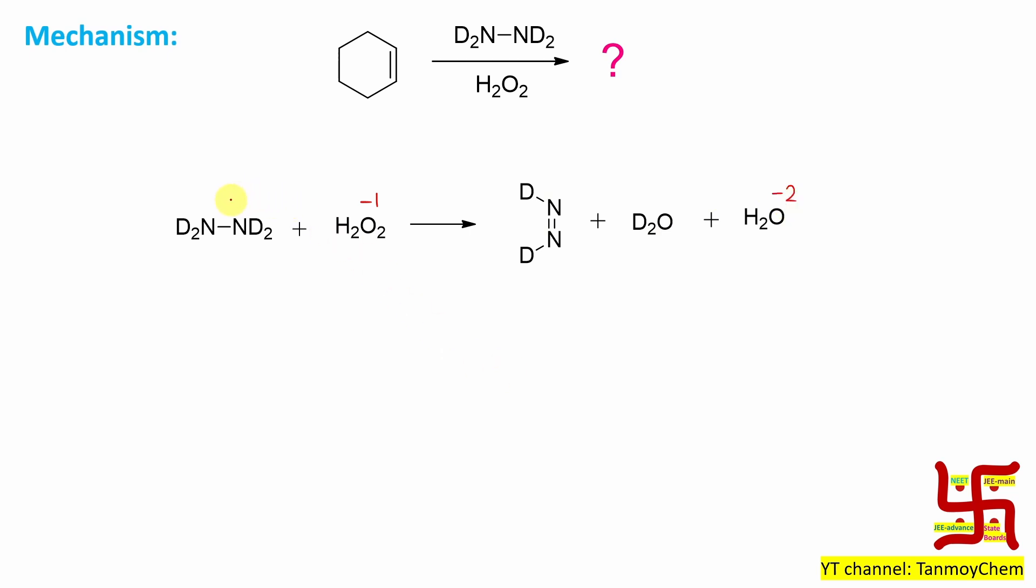So here if you look at this nitrogen its oxidation state is minus 2. So right now it is minus 1. So you can understand this part is the oxidation and this part is the reduction. And whatever these deuteriums are taken from here and here that reacts with one oxygen from here and produces this D2O molecule.